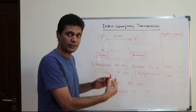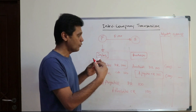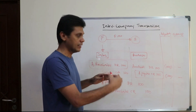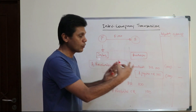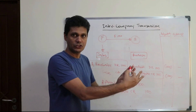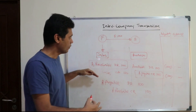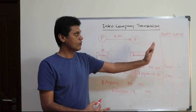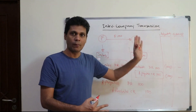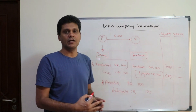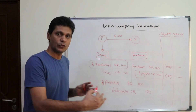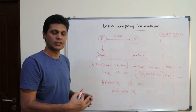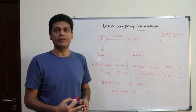This is how you record the intercompany transaction. When there is an intercompany transaction, we need to eliminate it from the group financial position. It will be recorded in the separate financial statements; however, when it comes to the group financial position, the intercompany transaction will be eliminated.